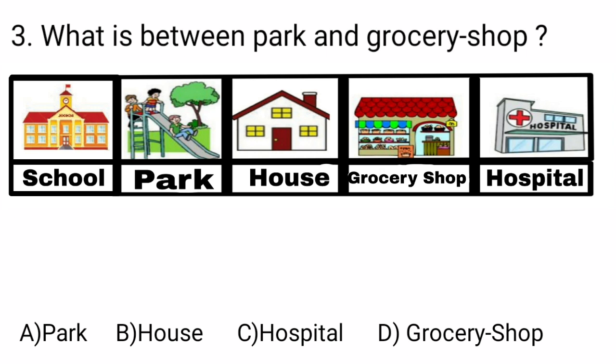Now come, let's check the order of the buildings given in the picture. First of all is school. In second position, park is there. At third position, house is there. At fourth position, grocery shop. And at fifth position, hospital is there.